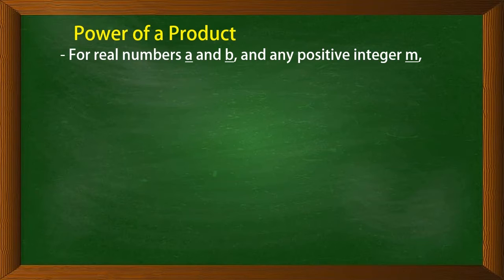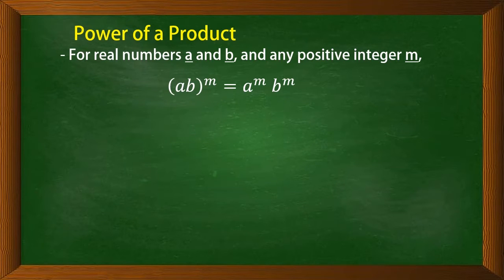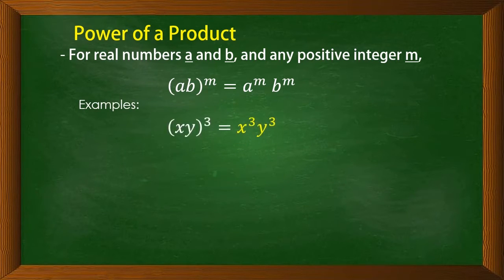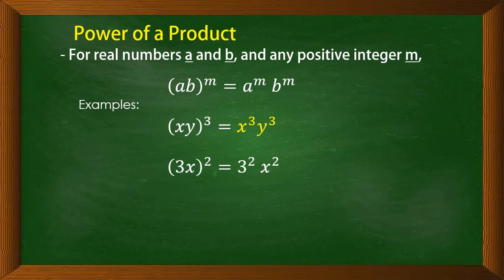The power of a product: for real numbers a and b and any positive integer m, (ab) to the power of m — distribute the power: a to the m, b to the m. For example, (xy) to the power of 3 — distribute the power 3 — equals x to the 3rd times y to the 3rd. Same as (3x) to the power of 2, which equals 3 squared times x squared, or 9x squared.